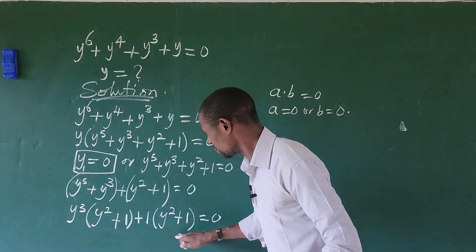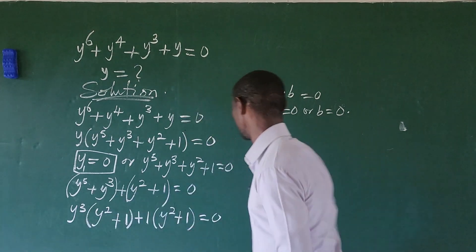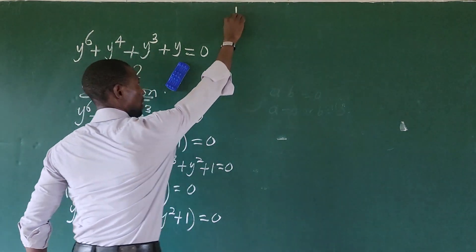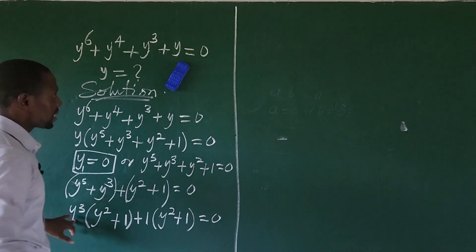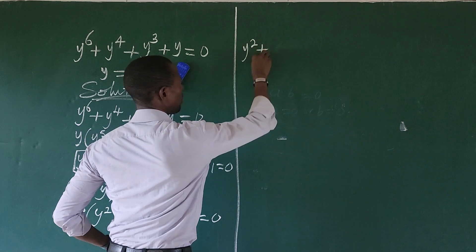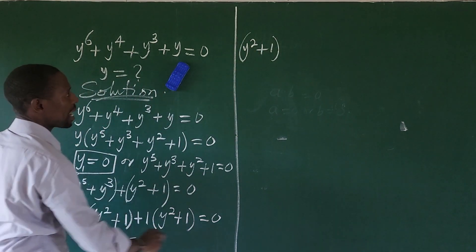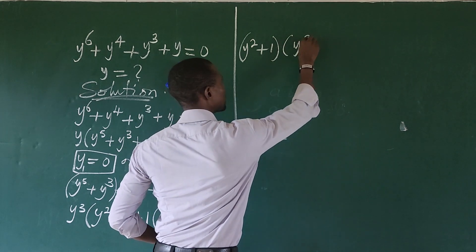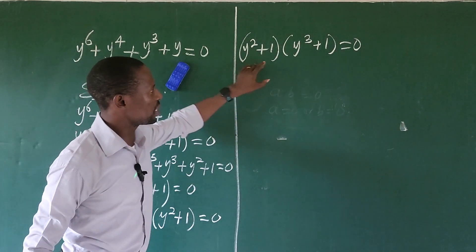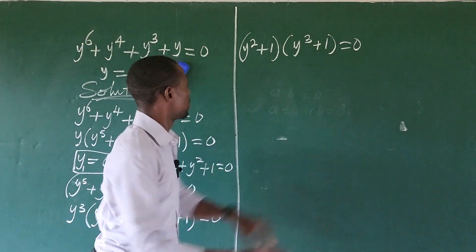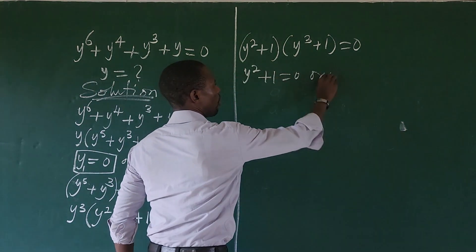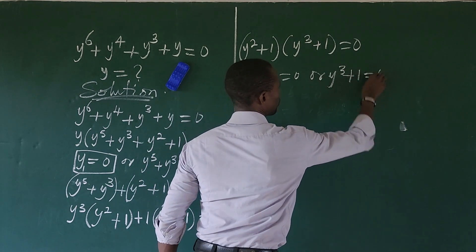So we take what's common and factor it out. We get (y² + 1)(y³ + 1) = 0. Again, we apply the zero product rule, equating each factor to 0. So we now have y² + 1 = 0 or y³ + 1 = 0.